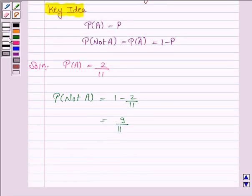Hence, the probability of not A is 9 by 11. And this completes the question. Thank you and have a good day.